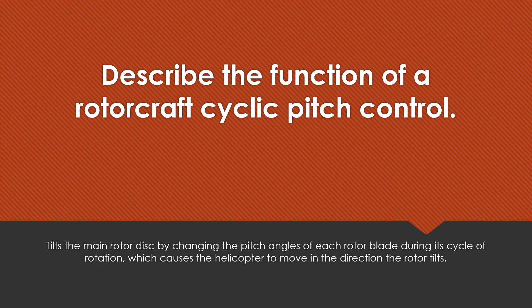It tilts the main rotor disc by changing the pitch angles of each rotor blade during its cycle of rotation, which causes the helicopter to move in the direction the rotor tilts.